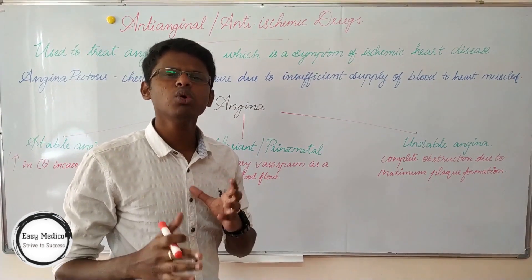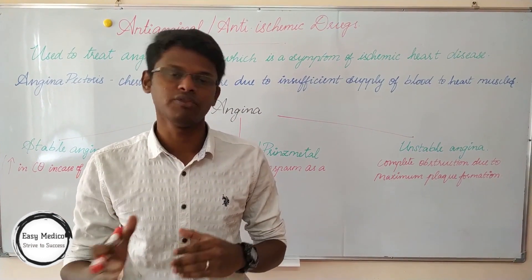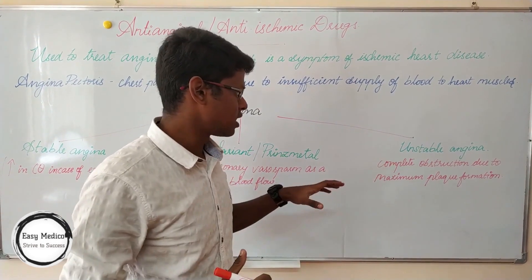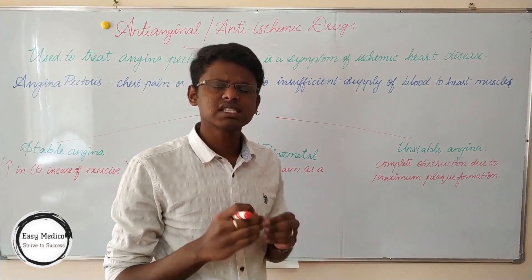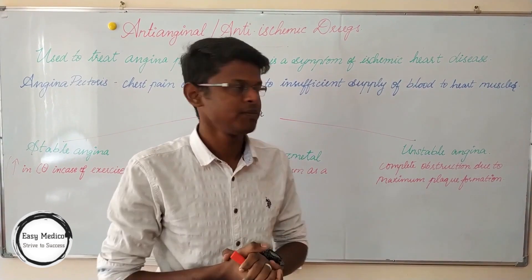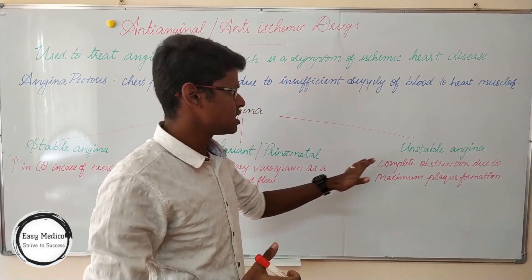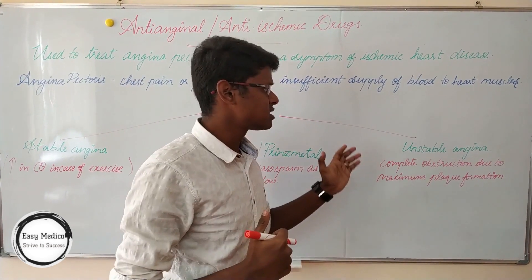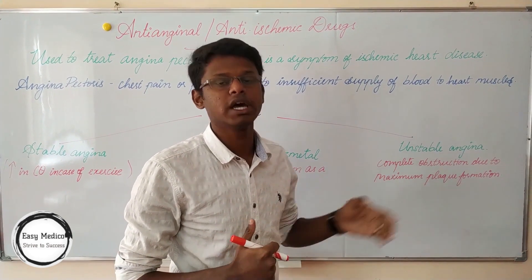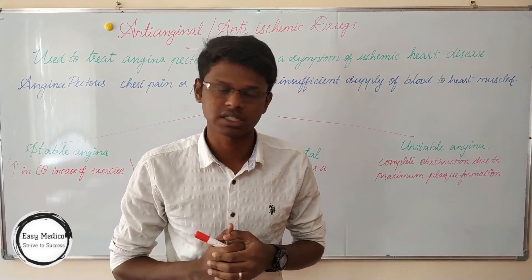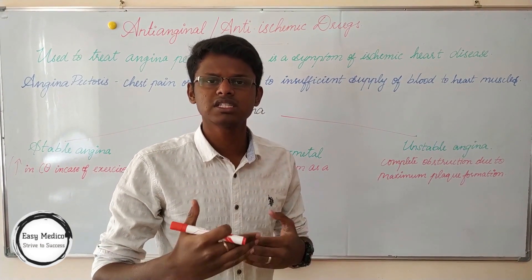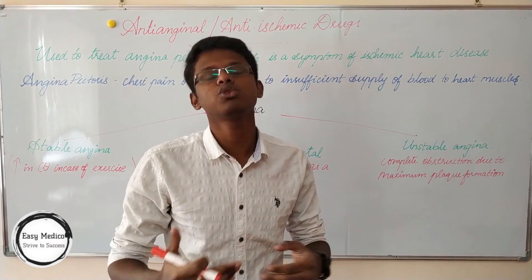The more severe or complicated form is unstable angina. This occurs when there is complete obstruction or plaque formation in a blood vessel, resulting in unstable angina. When this sustains for a longer duration, it leads to myocardial infarction. The duration of pain is irregular in pattern, ranging from 15 to 20 minutes.